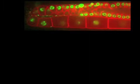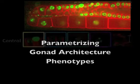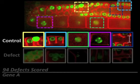To analyze phenotypes computationally, we parameterized them by scoring for defects in gonad architecture. In the colored boxes are examples of five regions of a control gonad. Below, the same regions are shown when specific defects are present. Overall, we parameterized the phenotype for each gene by scoring for 94 possible defects.